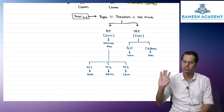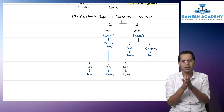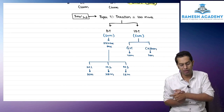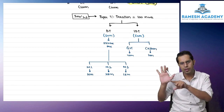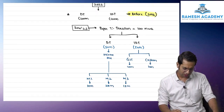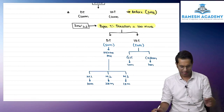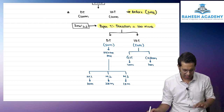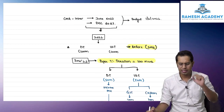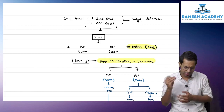GST carries 40 marks and customs carries 10 marks. The major allocation in income tax is for heads of income — 5 heads of income carrying 50% of the 50 marks, meaning 25 marks. This class covers the new syllabus applicable from June 2023 onwards, and all the amendments applicable for your examination have been taken care of in these classes.